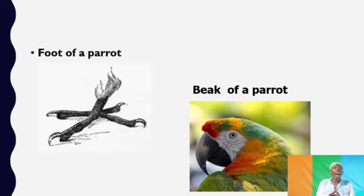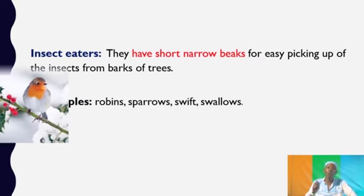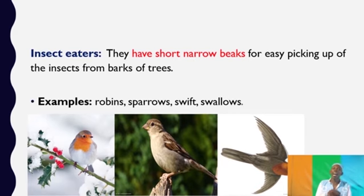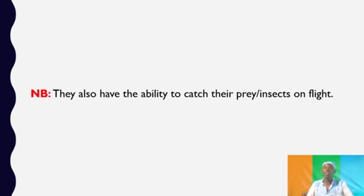Insect eaters have short narrow beaks for easy picking up of insects from barks of trees. Examples of insect eaters include the robins, the sparrows, the swift, and the swallows. They also have the ability to catch their prey or the insects when they are in flight. They have the biggest speed.